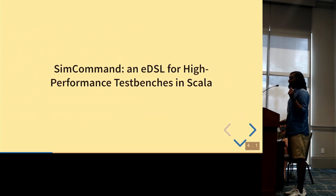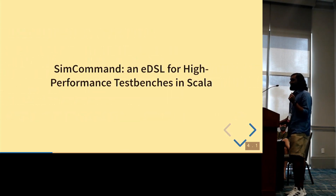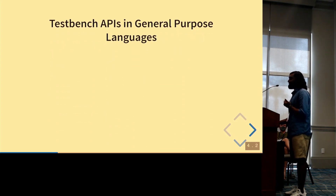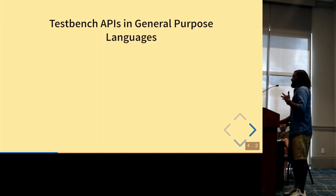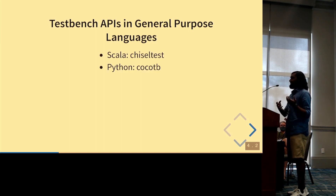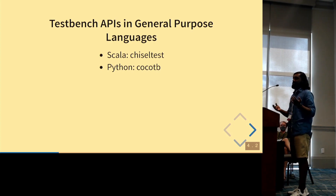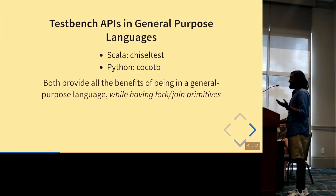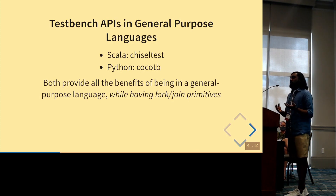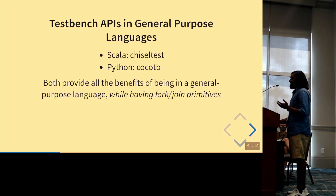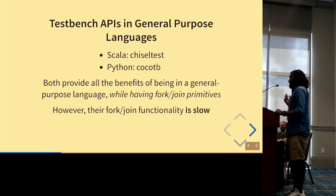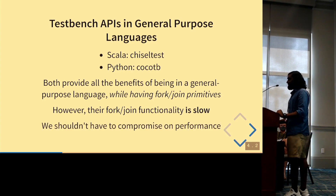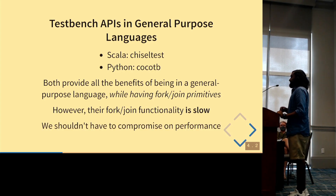The first EDSL is SimCommand — a DSL for expressing high-performance test benches in Scala. Test bench APIs in general purpose languages, like ChiselTest in Scala and the CocoTB library in Python, are great because we love using general purpose languages for test benches, much better than SystemVerilog. One big advantage of both is their fork-join primitives, used ubiquitously when writing test benches. However, both suffer from very slow fork-join functionality, and we shouldn't have to compromise on performance to use a high-level language for test benches.